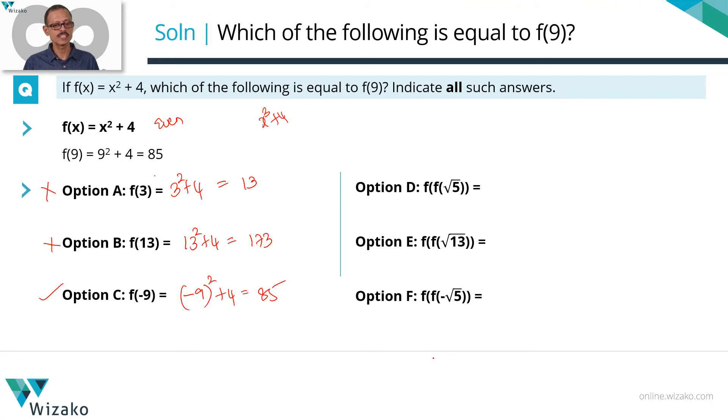Let's run through the remaining three also and check out whether we get the same answer as 85 for those. This is a recursive function f(f(√5)). So step one, let's find out f(√5). f(√5) is equal to √5 squared plus 4 which is, √5 squared is 5, 5 plus 4 is equal to 9. So f(f(√5)), now instead of f(√5) we have found that value to be 9. So this is equal to f(9). So if f(f(√5)) is equal to f(9) then it has to be equal to 85. We are trying to find out which all have the same answer option as f(9). This is the same as f(9). So answer option D is one of our answers.